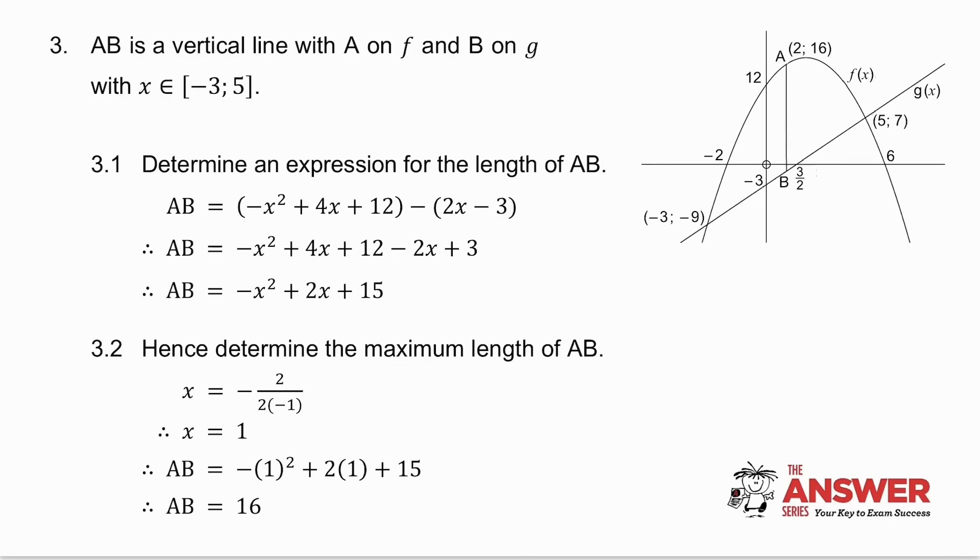Alright. So to get the length of AB, what I do, it's a vertical line. So I take the y value at A minus the y value at B. So I take the y value of the top graph minus the y value of the bottom graph. The top graph is the parabola, the bottom graph is the straight line. So I take the parabola minus the straight line, and I simplify.